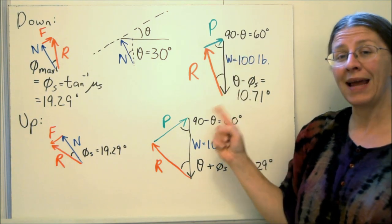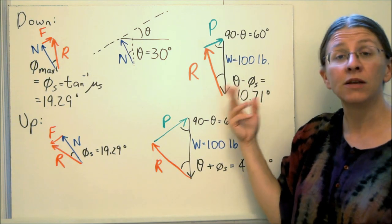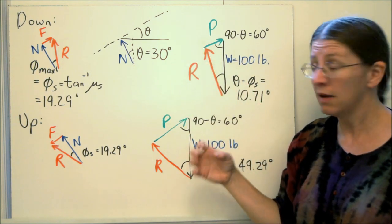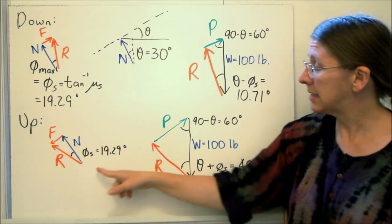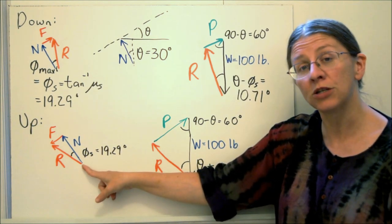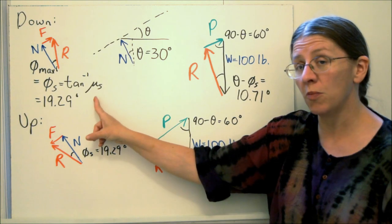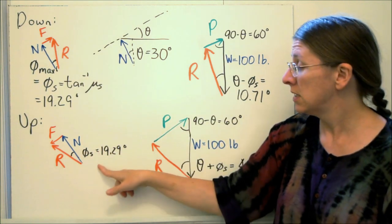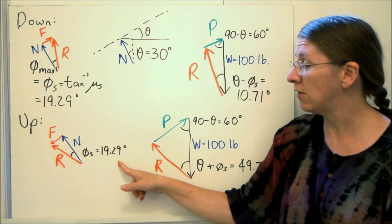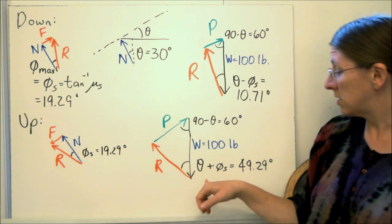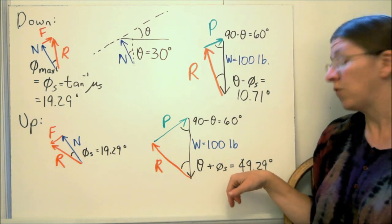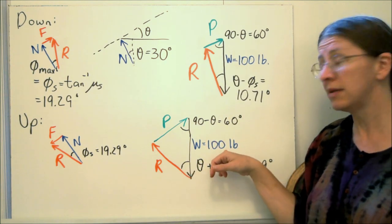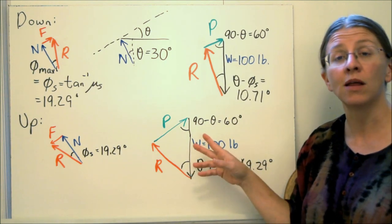So now I have all of my angles and I have one side. I can use the law of sines to find out what p and r should be in this case. And it's the same thing down here, except that now my r is in the other direction. This one, r is pointing up the slope with f and here it's pointing down the slope with f. So this φs now is the same, but it's on the other side. So now I have θ plus φs, it's 49.29. Still, I know all my angles. I know that w is 100 pounds and I can find all of this with the law of sines.